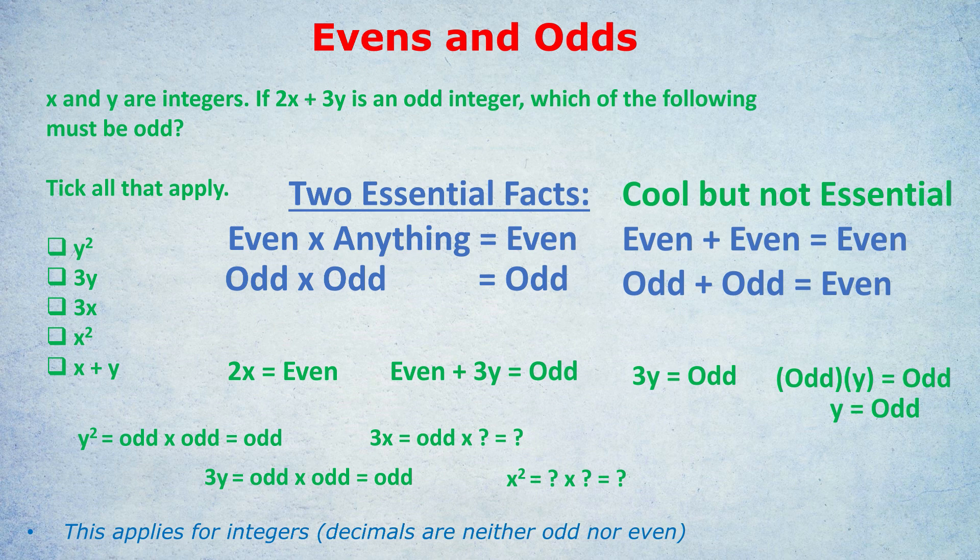Finally, X plus Y. Some of you may have ticked that if you thought X was definitely even, but we don't actually know anything about X, so we wouldn't tick E either. X plus Y is an unknown plus an odd, which is unknown because we don't know about X.